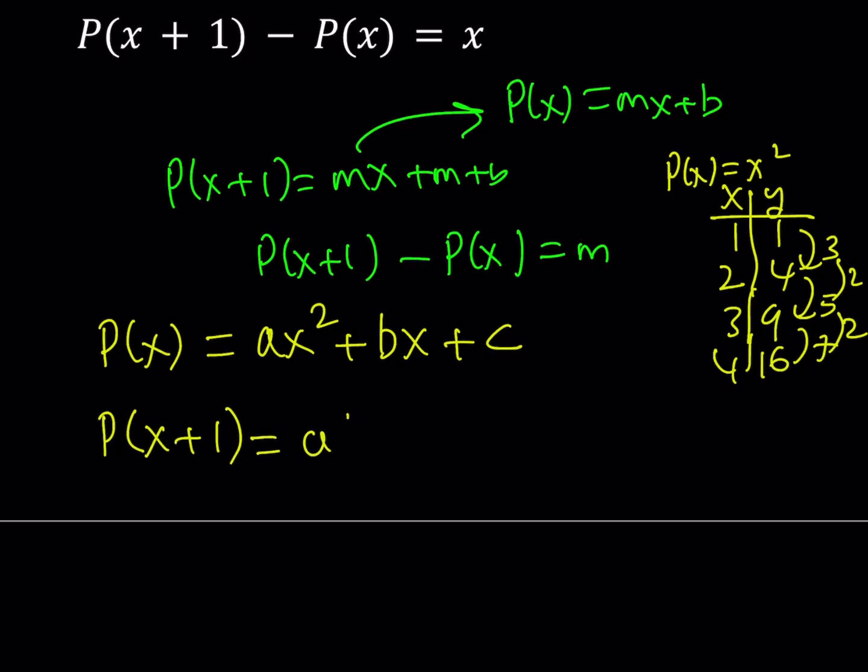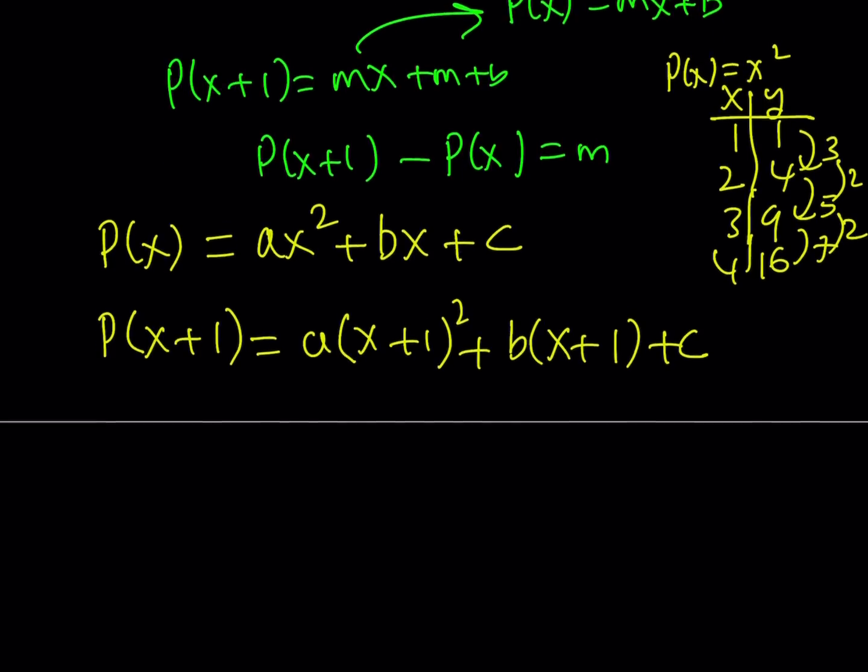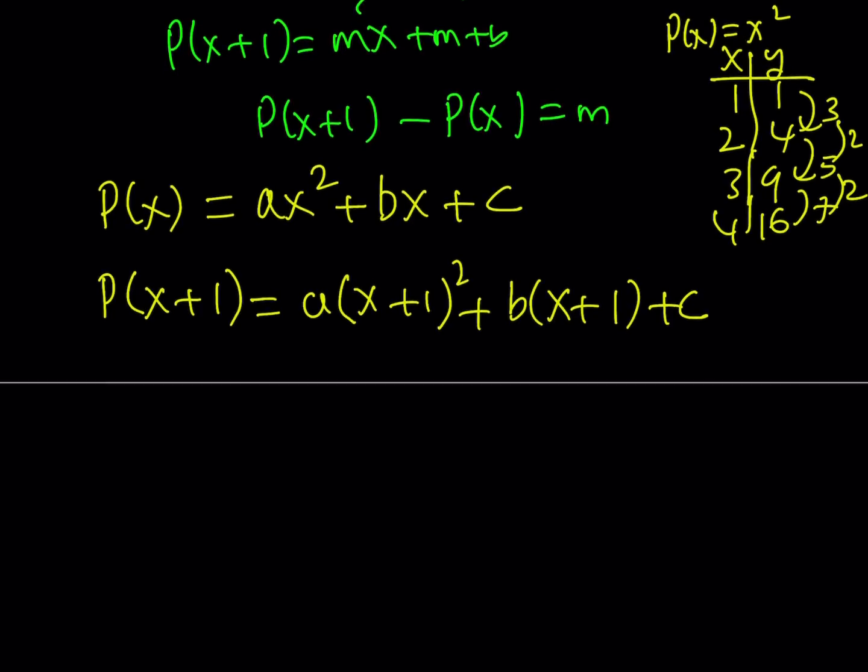Replacing X with X plus 1. We get the following. Let's go ahead and simplify P of X plus 1. And then from that, we're going to subtract P of X. So if you distribute, you get X squared plus 2X plus 1.